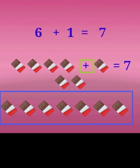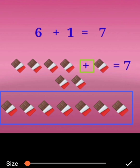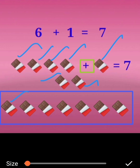Next one: 6 plus 1 is equal to 7. 1, 2, 3, 4, 5, 6. Adding 1 more chocolate. Totally how many chocolates? 1, 2, 3, 4, 5, 6, 7. The answer is 7. 6 plus 1 is equal to 7.